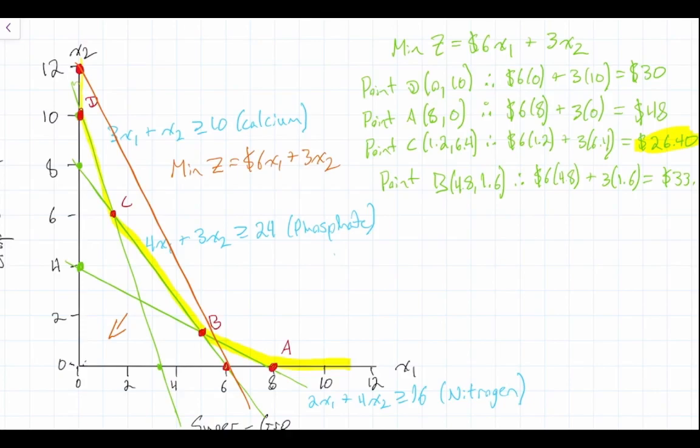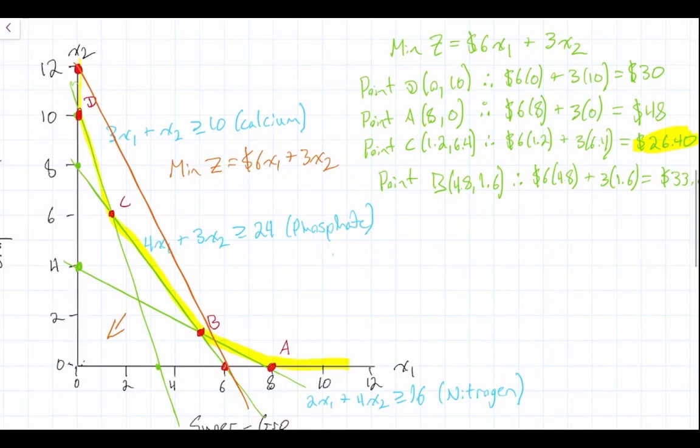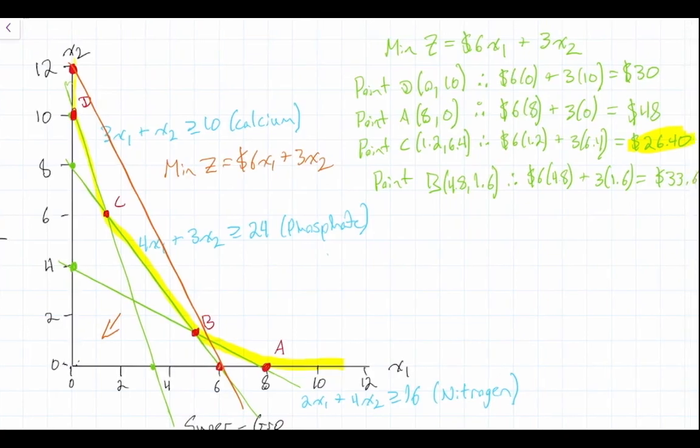So if you just take a straight edge and you trace it along the graph, what you're going to get is the last feasible solution or your optimal solution where the point touches the line last is at point C. Just drawing a straight line there. You can see that these two lines are parallel with each other. So as we move the line towards the origin, it's the last point within our feasibility region. And we've identified that it is point C.